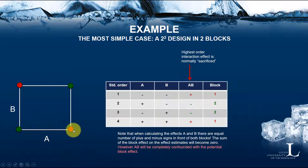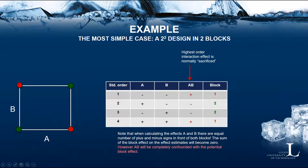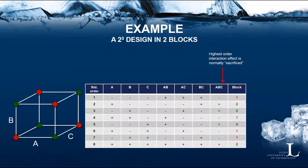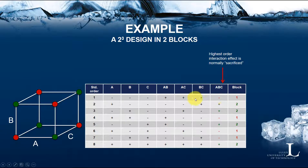Here is an illustration of which design runs we allocate to different blocks — the red ones are block 1 and the green ones are block 2. Now let's look at the 2³ design in two blocks. The same idea applies: we choose the highest-order interaction term available, which is A-B-C. When A-B-C has a minus sign, we allocate that run to block 1; when we have a plus sign, it goes to block 2, and so on. It is quite easy to allocate the blocks when you only have two blocks.